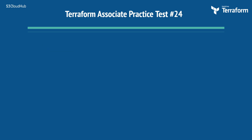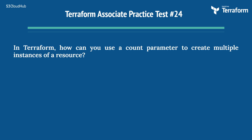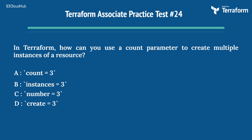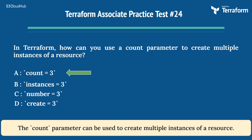The twenty-fourth question is: in Terraform, how can you use a count parameter to create multiple instances of a resource? Option A: count = 3. Option B: instances = 3. Option C: number = 3. Option D: create = 3. The right answer is Option A: count = 3. The count parameter can be used to create multiple instances of a resource.